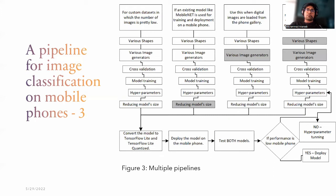Based on our observation, there are four variants in which you can use this pipeline. When using a custom dataset with a low number of images, it is recommended to use all steps: trying different shapes, various image generators, cross-validation, model training, hyperparameter tuning, and model size reduction. If you are using an existing mobile architecture, there is no need to reduce model size. When pictures are loaded from the gallery, you are not testing in real time, so you don't have to use an image generator. If you are using a medical image dataset where changing the shape can change the category, do not use the first two steps of trying various shapes and image generators.